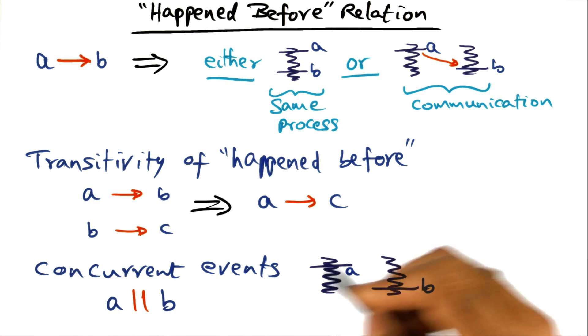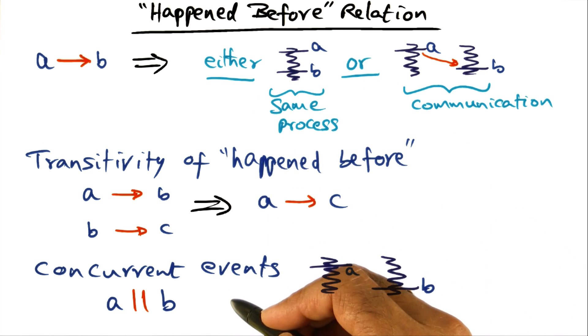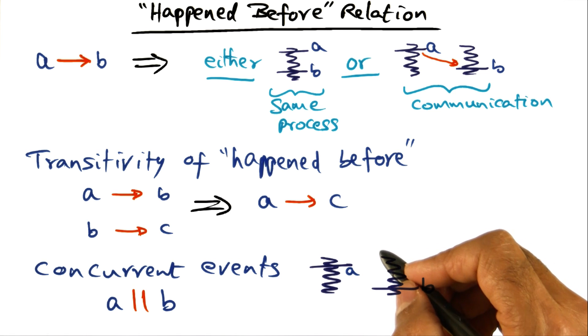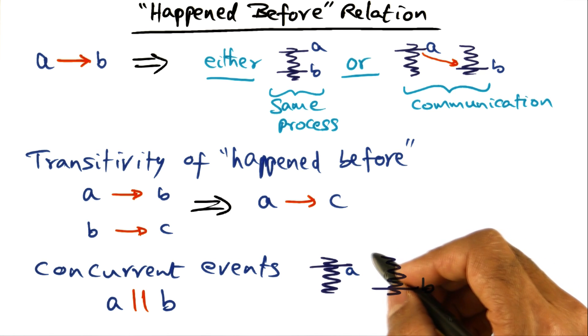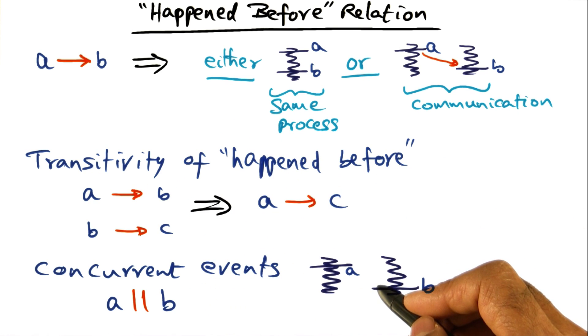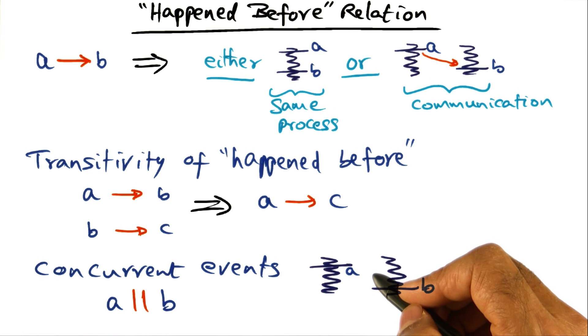So, important point about this concurrent events and the happen before relationship is that in structuring a distributed algorithm, it's important to recognize what events are connected by the happen before relationship and what events are concurrent events. And once you have an understanding of these two concepts, then you can build robust distributed systems and robust applications.